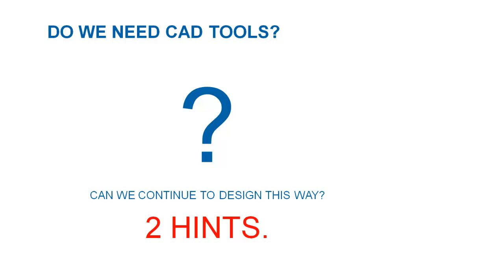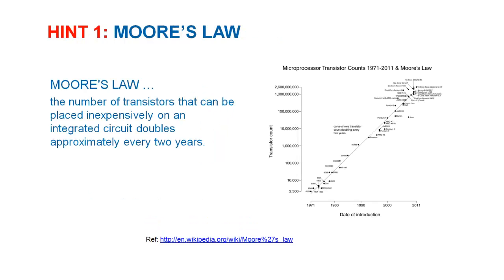So how do we implement our design with current technology given the current demand for digital systems? Two key hints suggest the direction we should go. First, looking at history and tracking the number of transistors available, Moore's Law states that the number of transistors that can be placed on a die without too much cost doubles every two years.